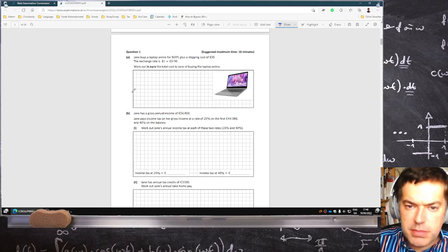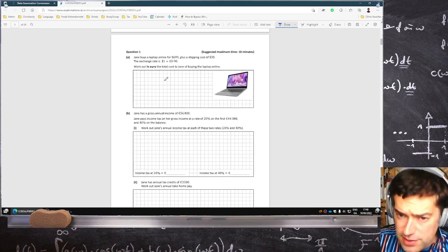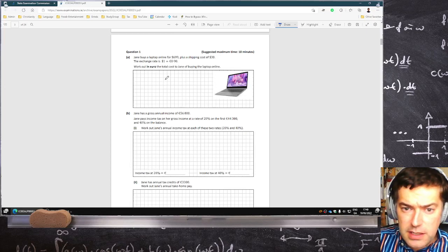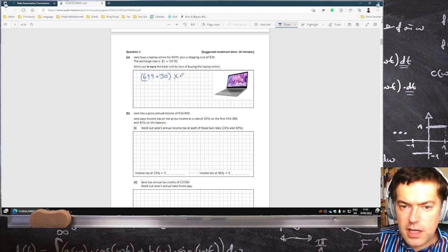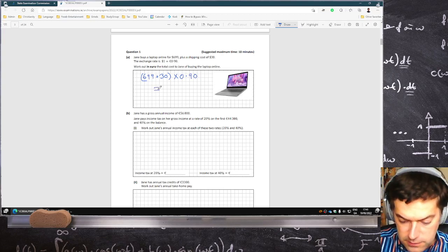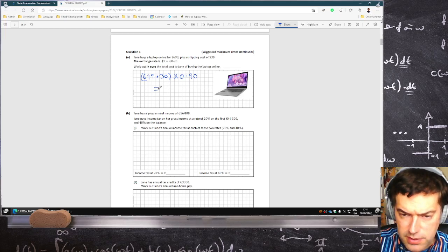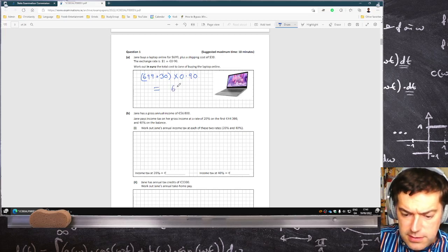Jane buys a laptop for $699 plus a shipping cost of $30. The exchange rate is $1 equals €0.90. Work out in Euro the total cost of Jane buying this laptop. Now, it's going to be $699 plus $30, that's dollars, times 0.90, the exchange rate. So let's bash that out on the calculator. $699 plus $30, times 0.90, and that's €656.10.